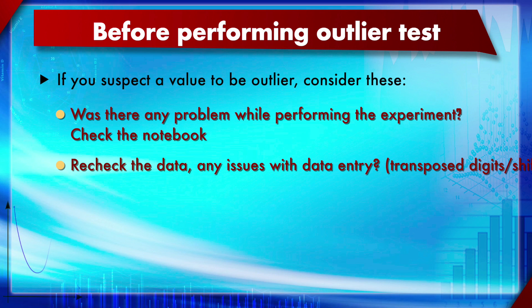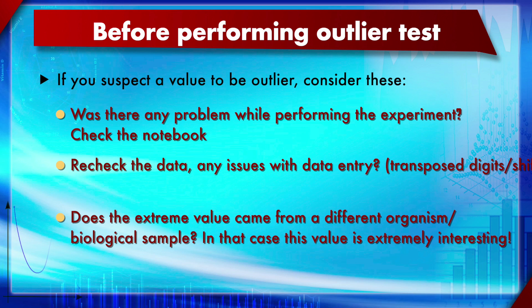Transposed digits means, for example, instead of 11 you write 31. A shifted decimal point means instead of 19.08 you put 9.908. Also, if during a filtration experiment you saw a lot of leakage that corresponds to the outlier you got, you can simply redo that experiment to get rid of that outlier.